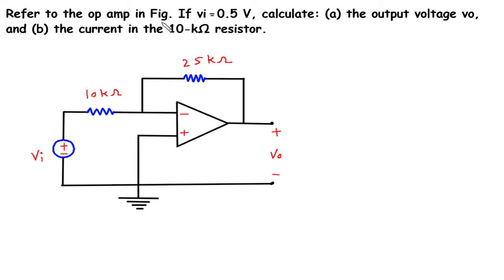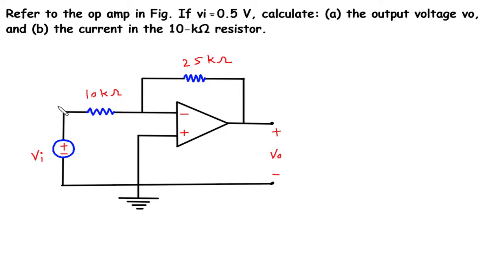Refer to the op-amp in the figure. If Vi is equal to 0.5 V, calculate the output voltage Vo and the current in the 10 kΩ resistor. We have to find the output voltage Vo when Vi is equal to 0.5 V, and the current in the 10 kΩ resistor.